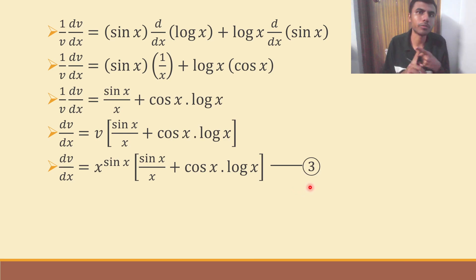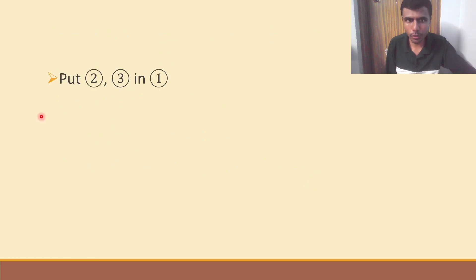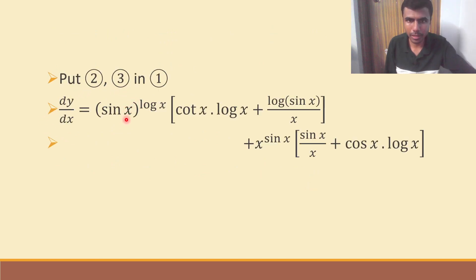Now, if you see, we got du by dx. We got dv by dx. Now, if you guys remember, our dy by dx is nothing but du by dx plus dv by dx. So, put equation 2 and 3 in equation 1. So, dy by dx is nothing but du by dx plus dv by dx. That's it. This is our answer.